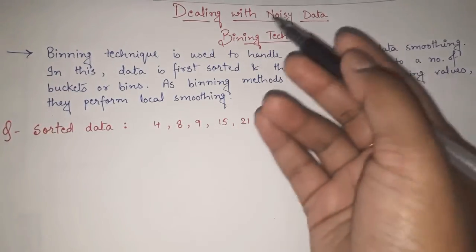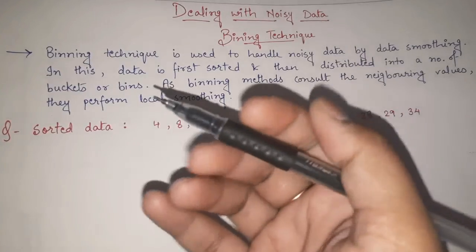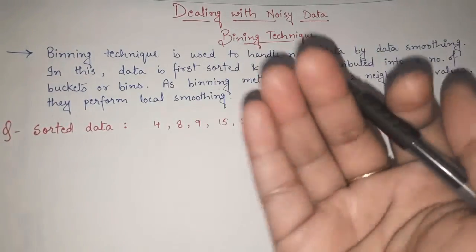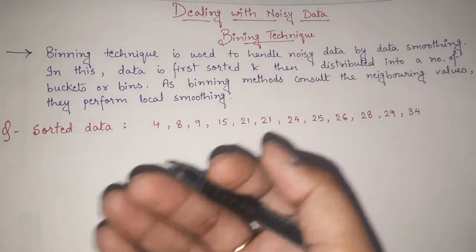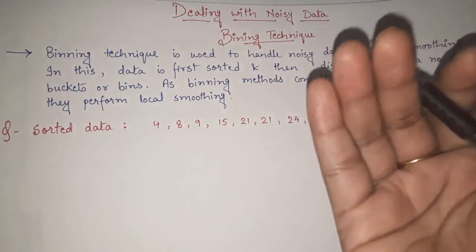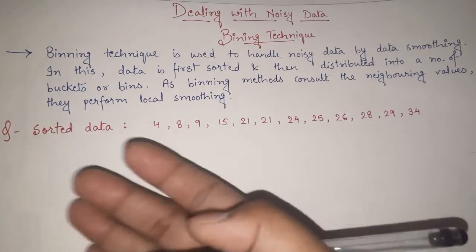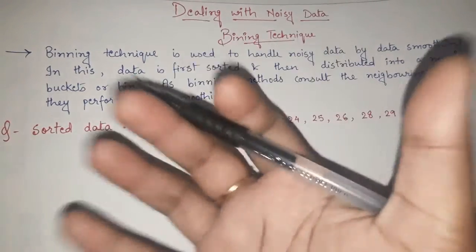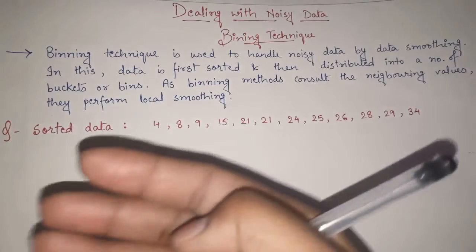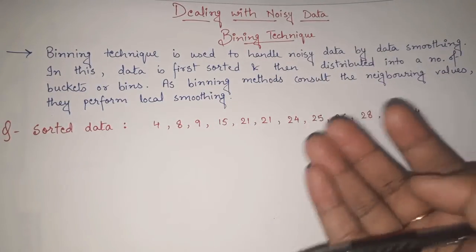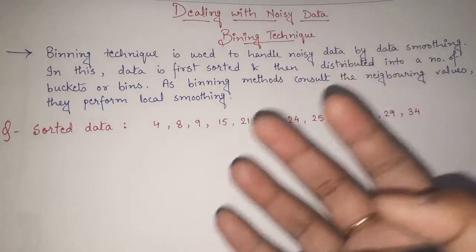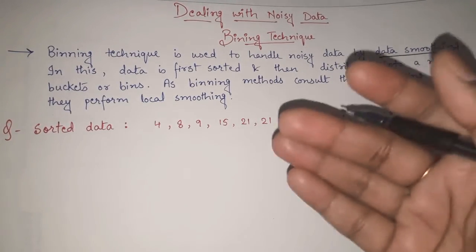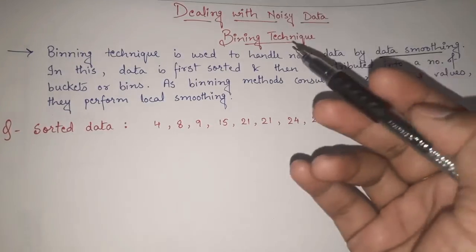Now what do we mean by noisy data, or what do we mean by noise in the data? Noise in the data means the unnecessary portions or the unnecessary information in the data. It is not necessary that in data we are having only useful information — whatever useless information is there, that is nothing but noise. So our first task is to remove that noise, and one of the best methods is data smoothing.